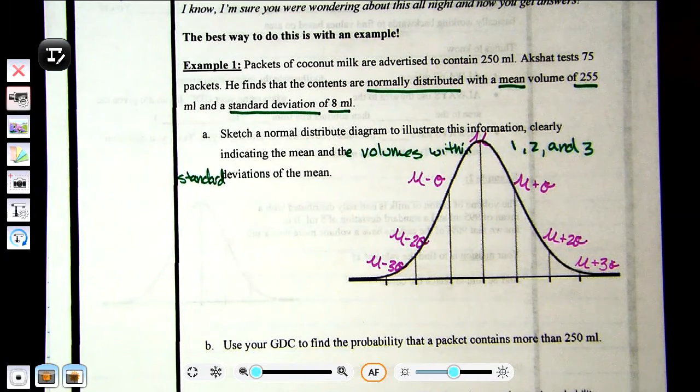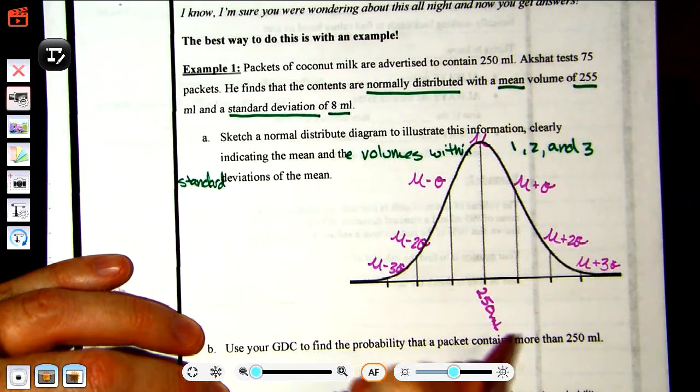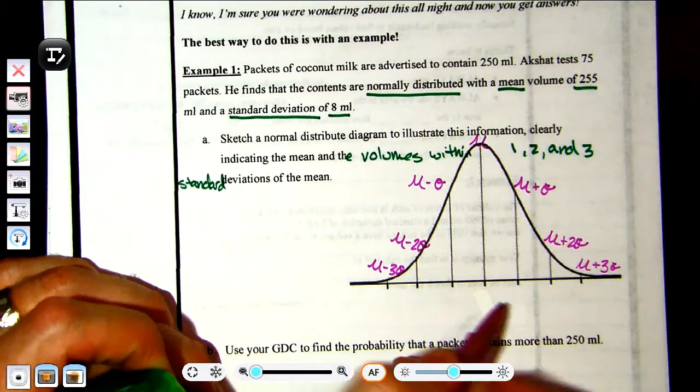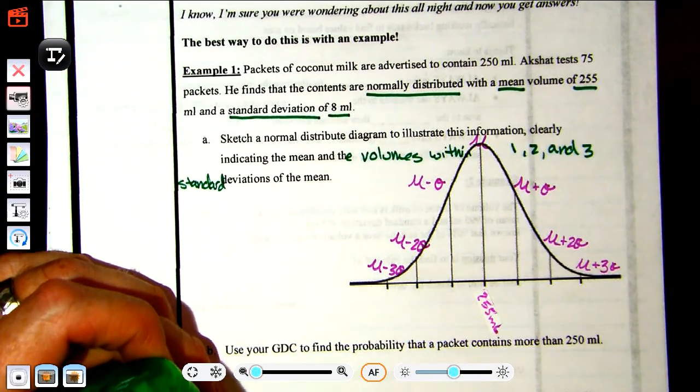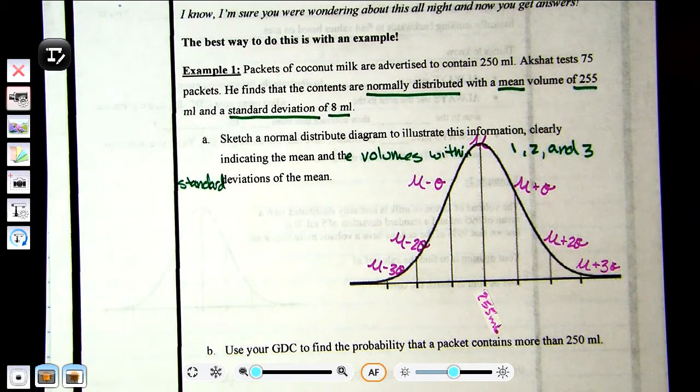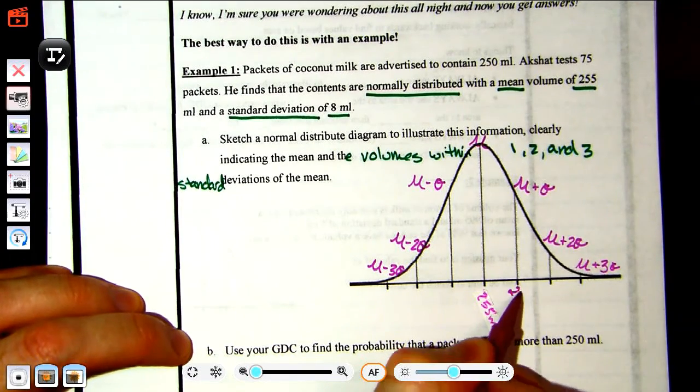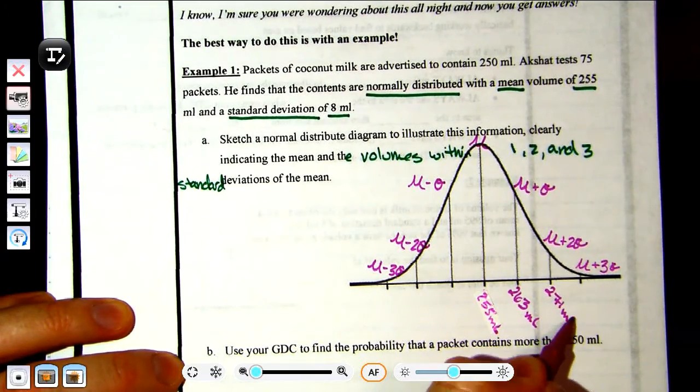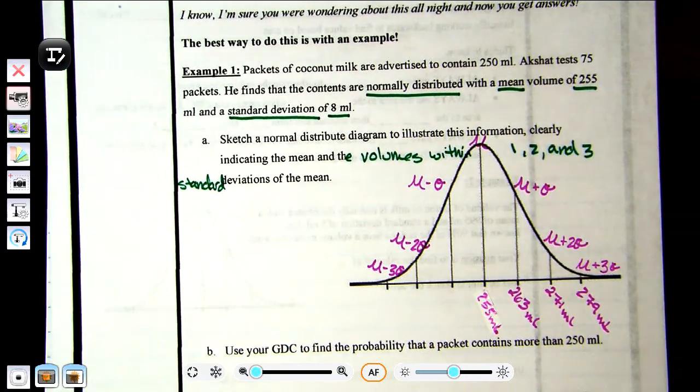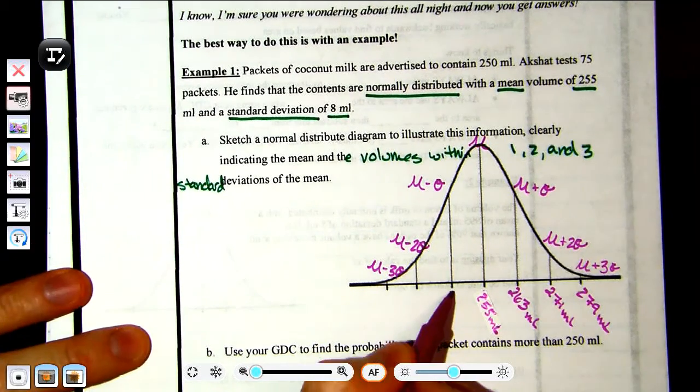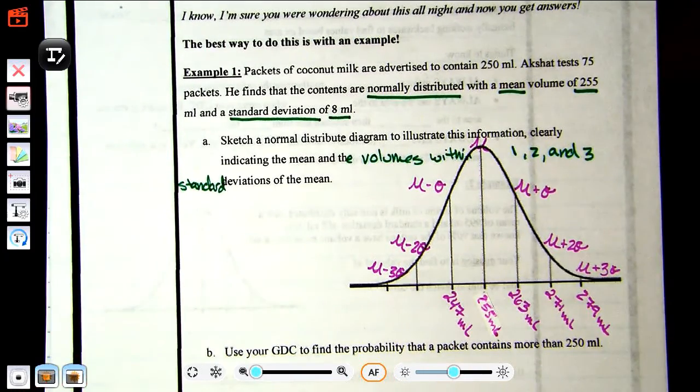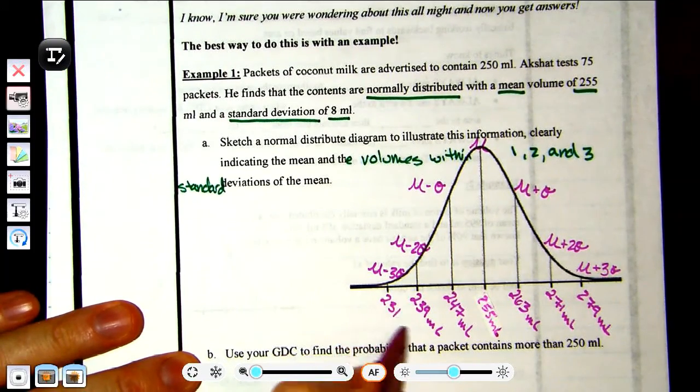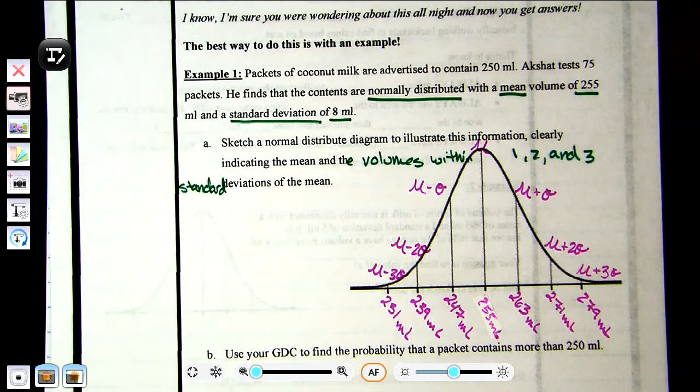We want to put this in context of the specific question and put in the values. So I'll label this as 255, not 250—that's the mean. Then we're going to continue to add 8 milliliters for the standard deviation: 263, 271, and lastly 279. And then obviously we're going to subtract to go the other direction: 247, 239, and lastly 231. So we've represented this information on the bell curve.